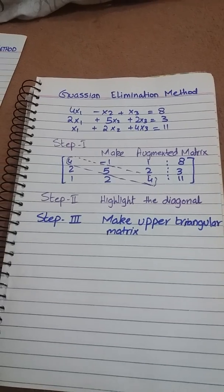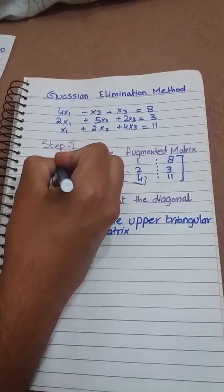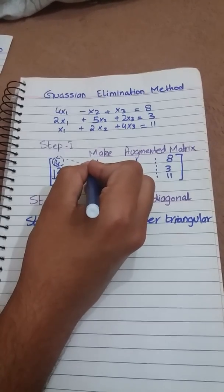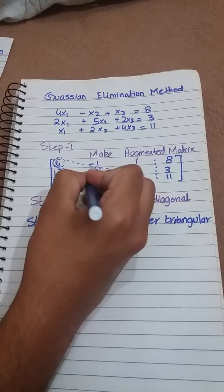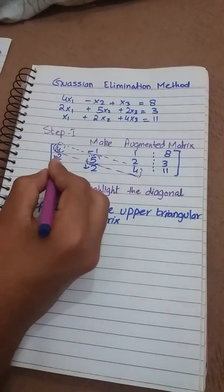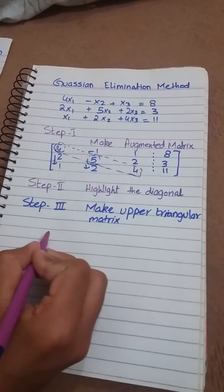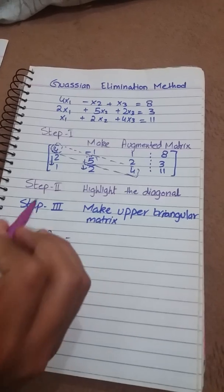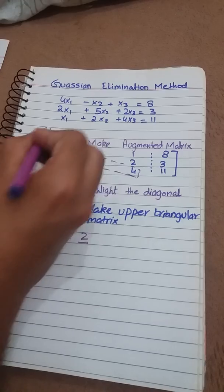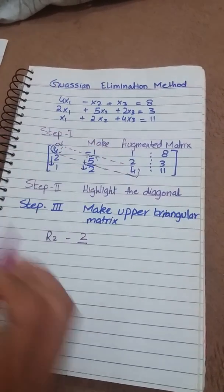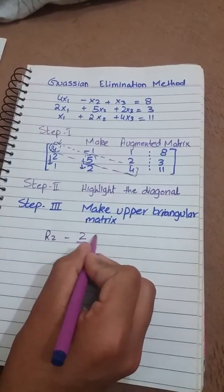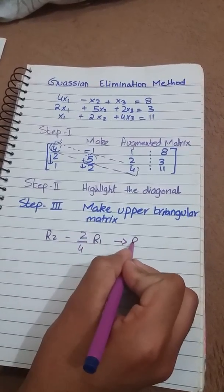First of all these are the pivoting elements to make these elements zero and this is the pivoting element to make this element zero. The element we are going to make zero: that row R2 minus the element we are going to make zero divided by its pivoting element which is 4 into the row of pivoting element R1 changing in R2.